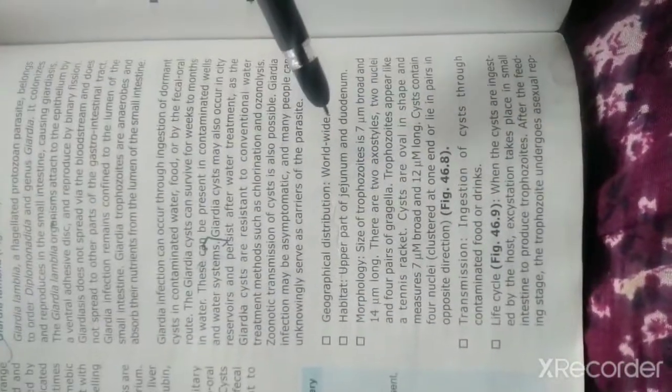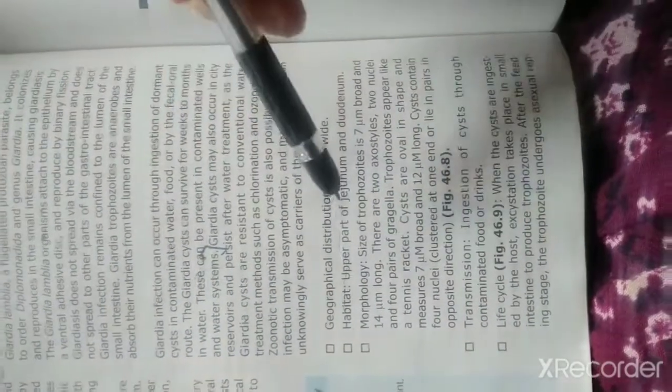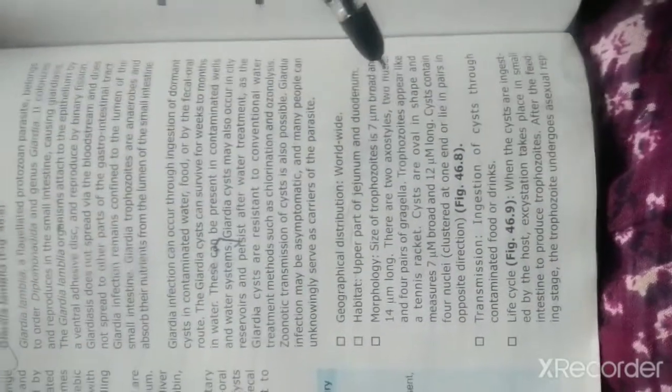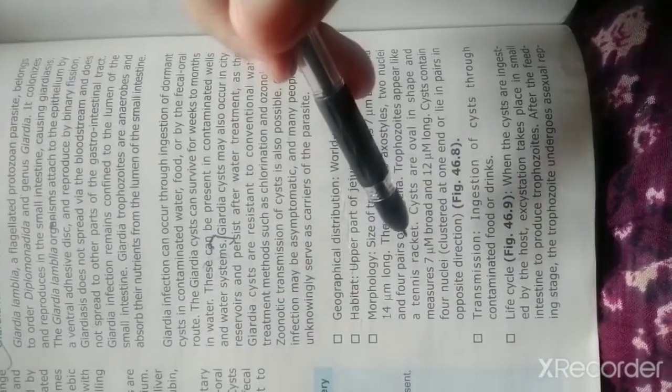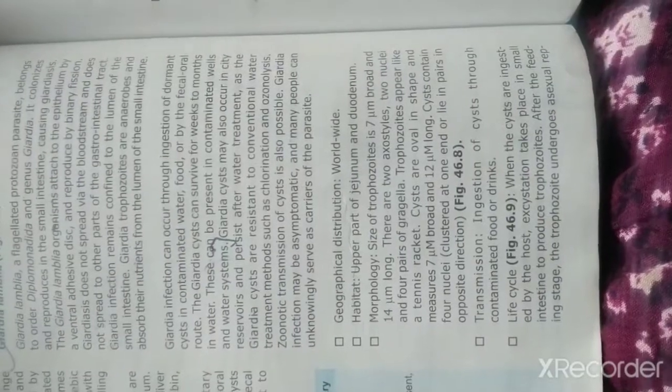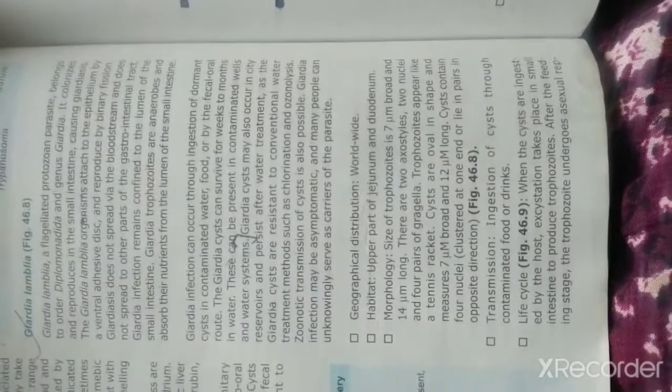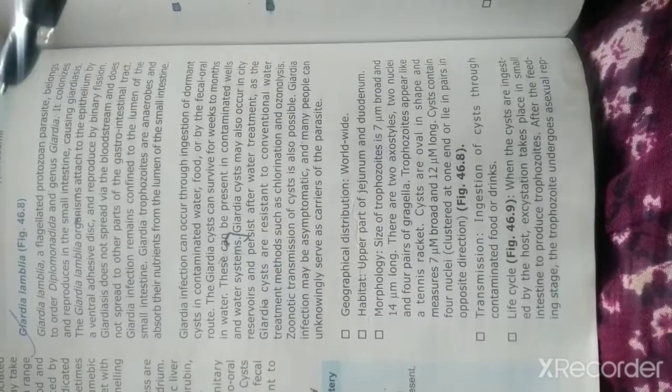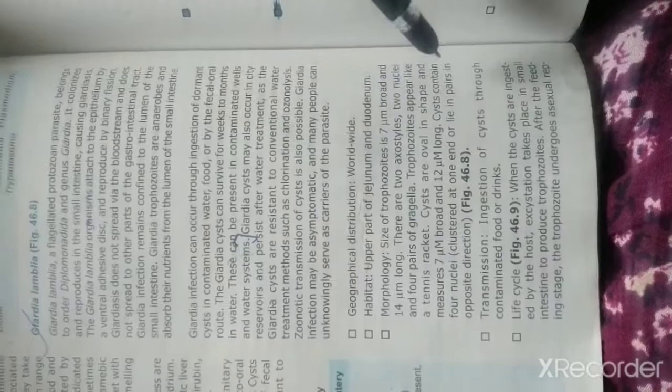Geographical distribution is worldwide. Habitat is the upper part of jejunum and duodenum. Morphologically, the size of the trophozoite is 7 microns broad and 14 microns long, with two axostyles, two nuclei, and four pairs of flagella. Trophozoites appear like a tennis racket. Cysts are oval in shape and measure 7 microns broad and 12 microns long. Cysts contain four nuclei.